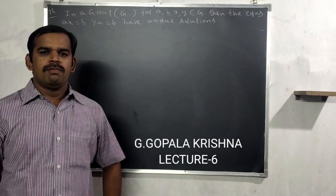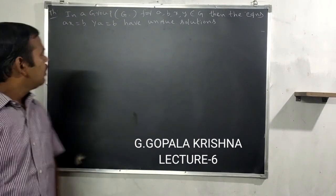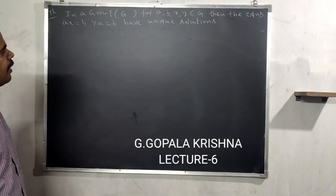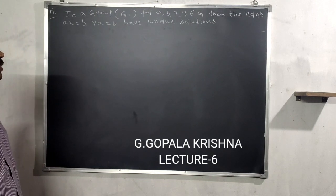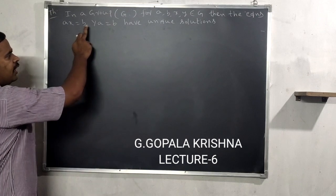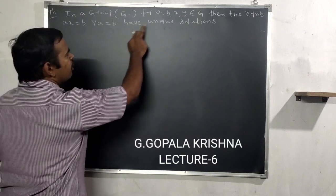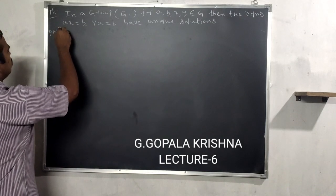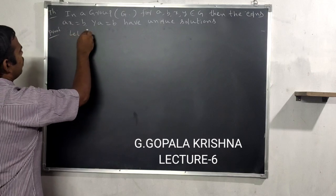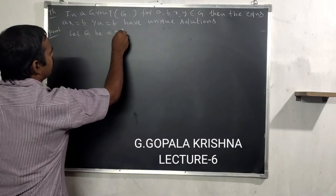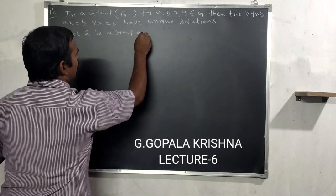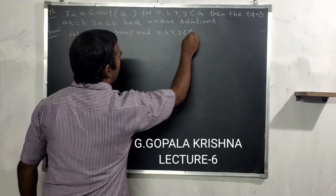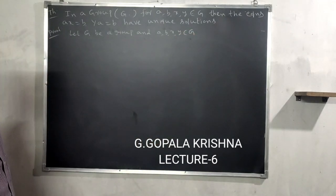Good morning students. Today we are discussing a group theory theorem: in a group G, for a, b, x, y belonging to G, the equations ax = b and ya = b have unique solutions. Proof: let G be a group and a, b, x, y belong to G. We prove that ax = b and ya = b have unique solutions.